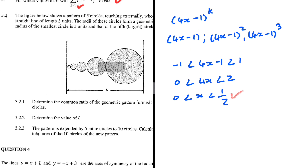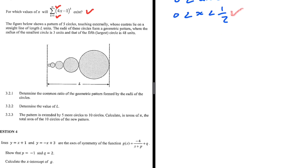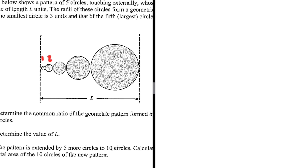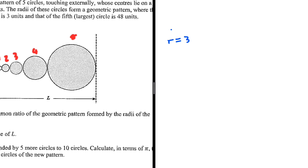For question 3.2, the figure shows a pattern of 5 circles touching externally whose centers lie on a straight line of length l units. The radii of these circles form a geometric pattern. The radius of the first circle is 3 units, and the radius of the fifth, largest circle is 48 units. So r1 equals 3.